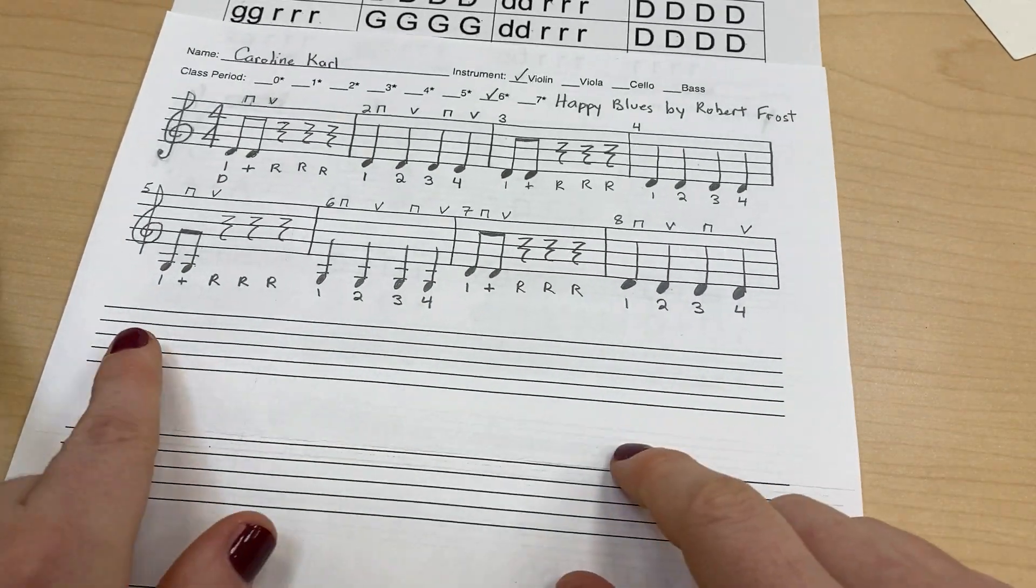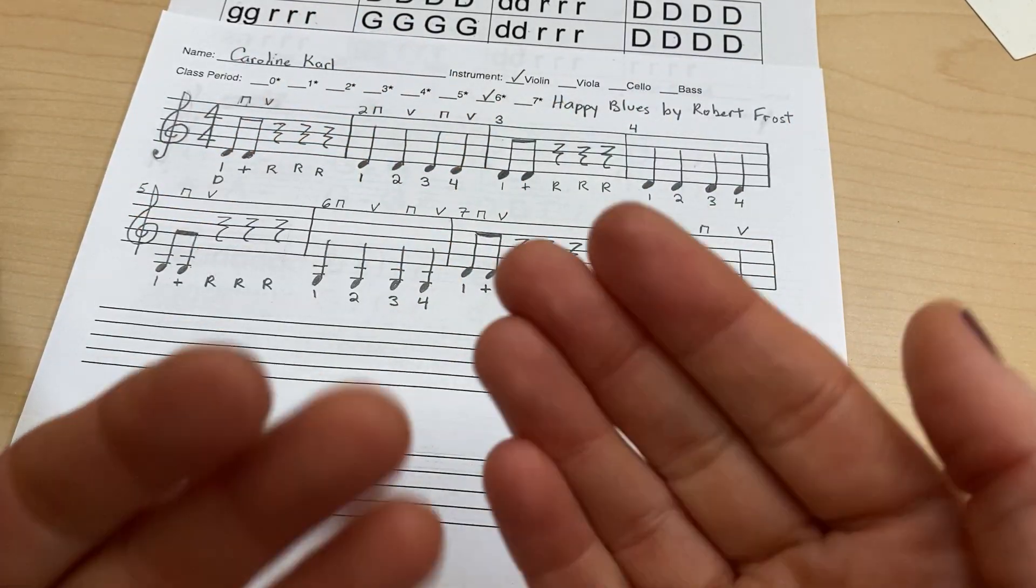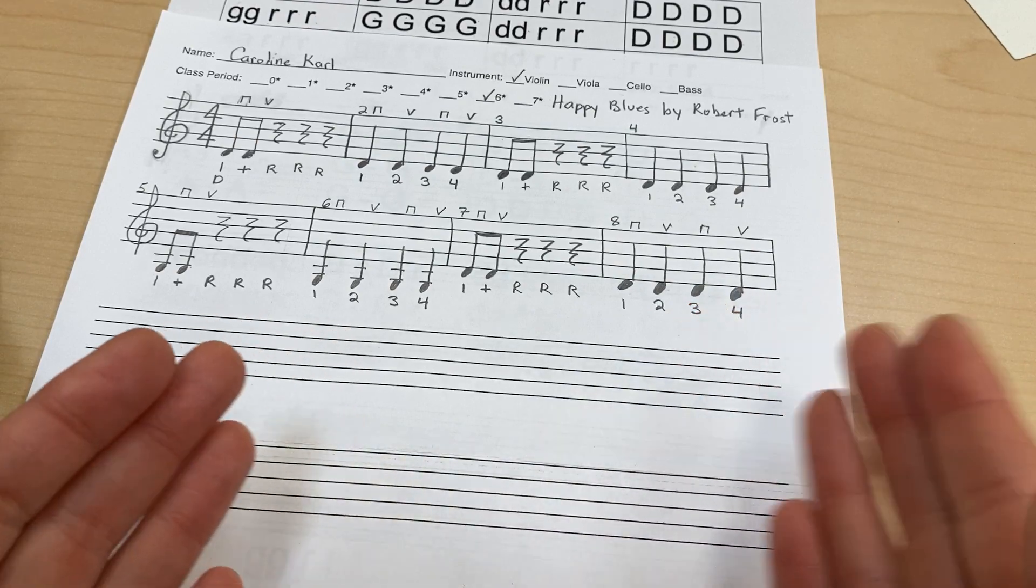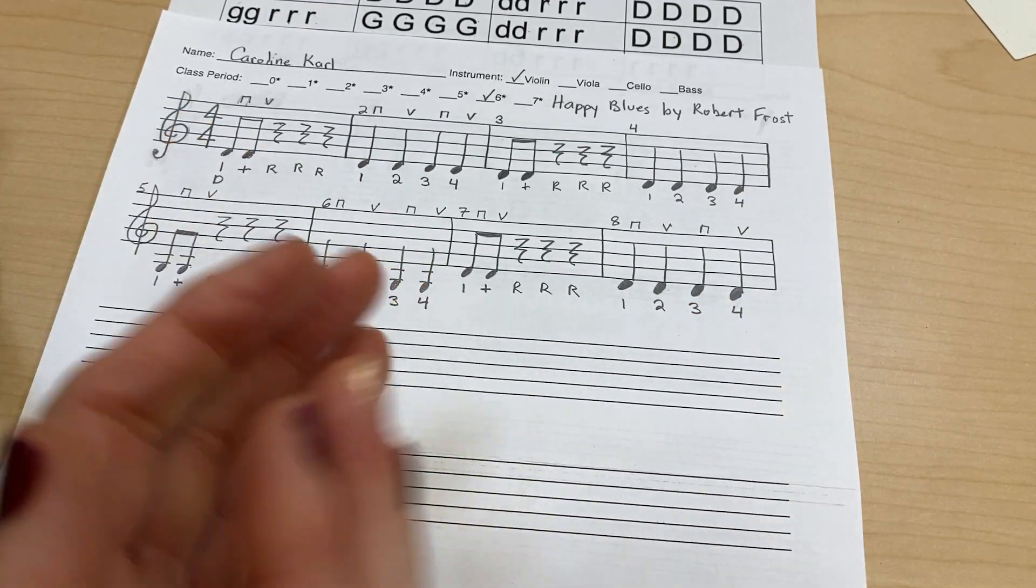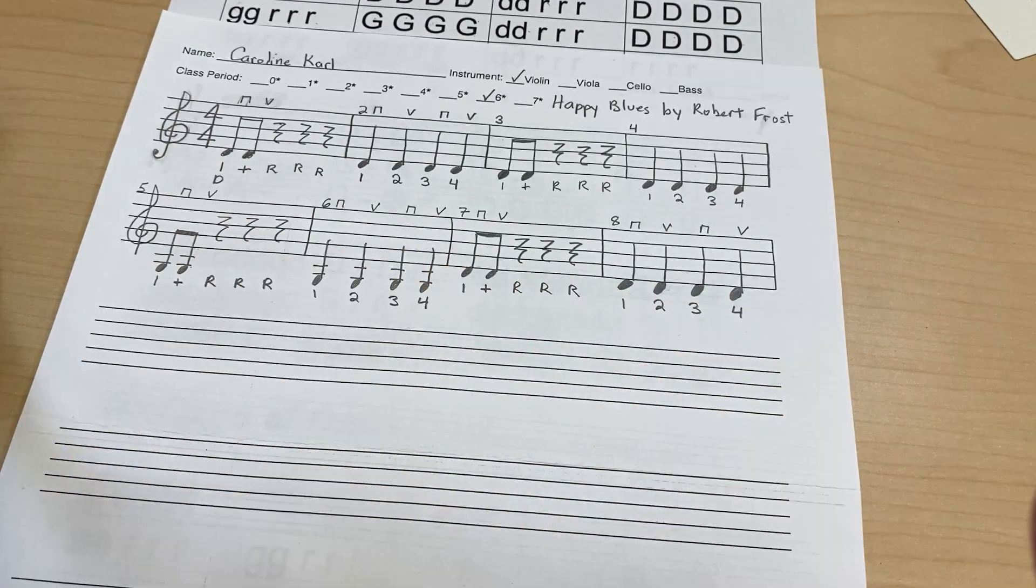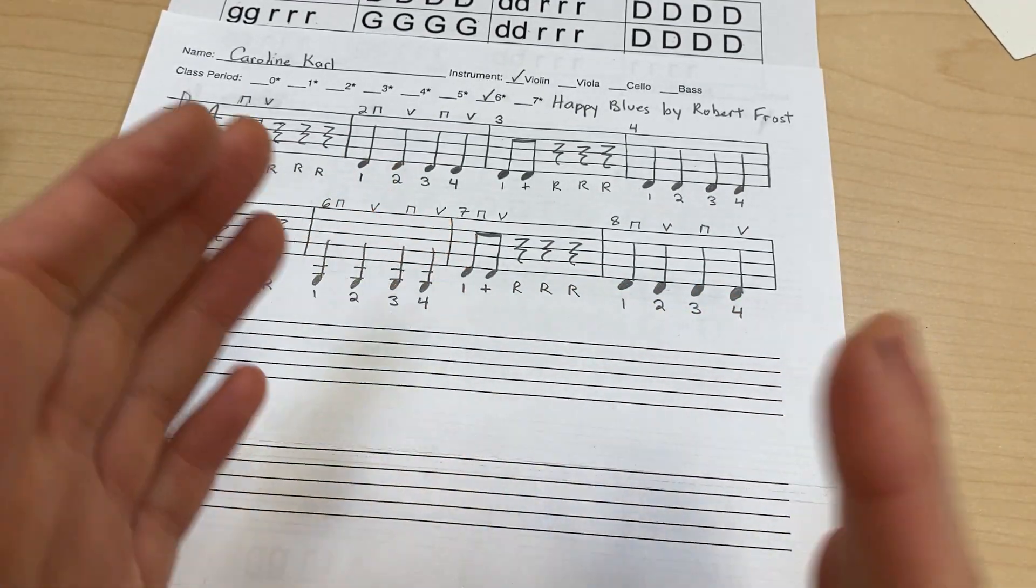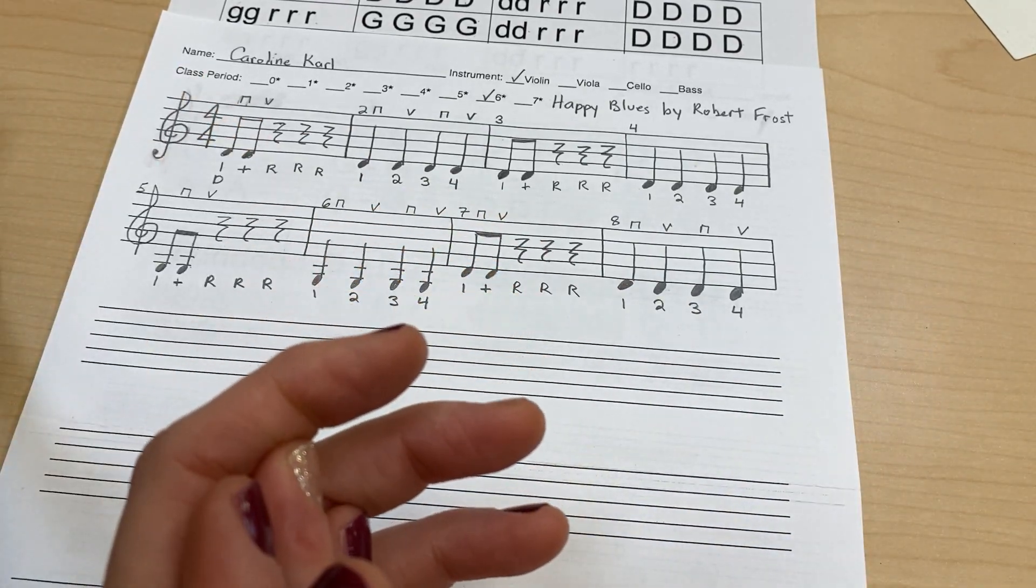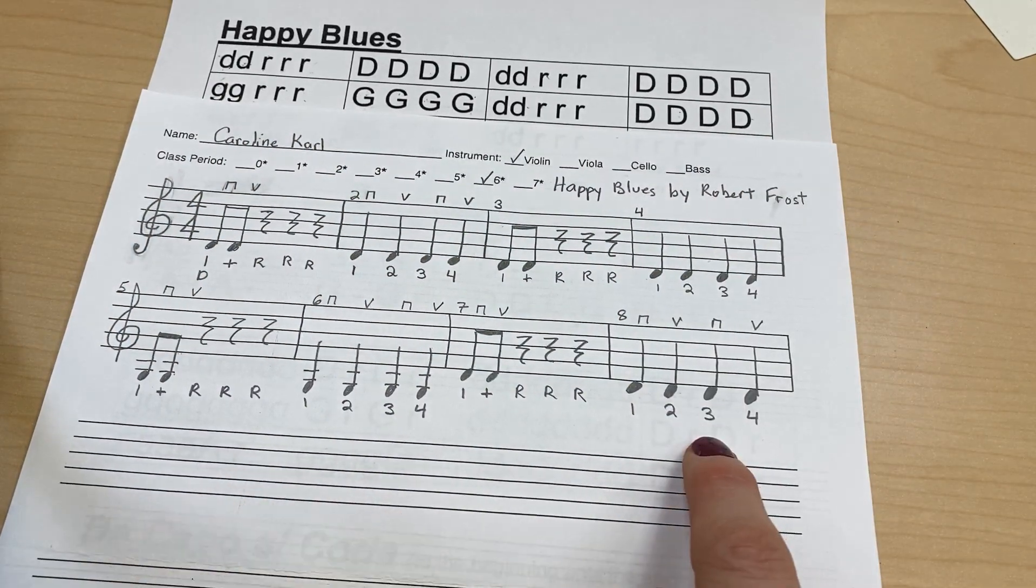Good. Let's clap and count it. Starting on second line. Ready? Go. One and rest, rest, rest. One, two, three, four. One and rest, rest, rest. One, two, three, four. And that, my friends, is the second line of Happy Blues.